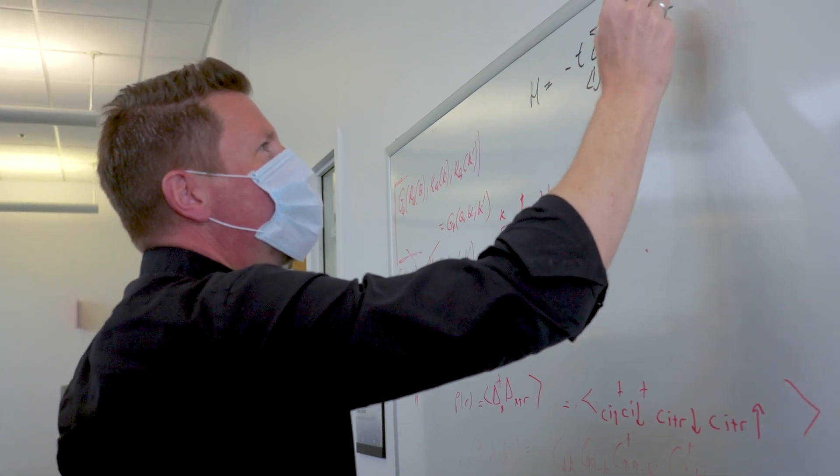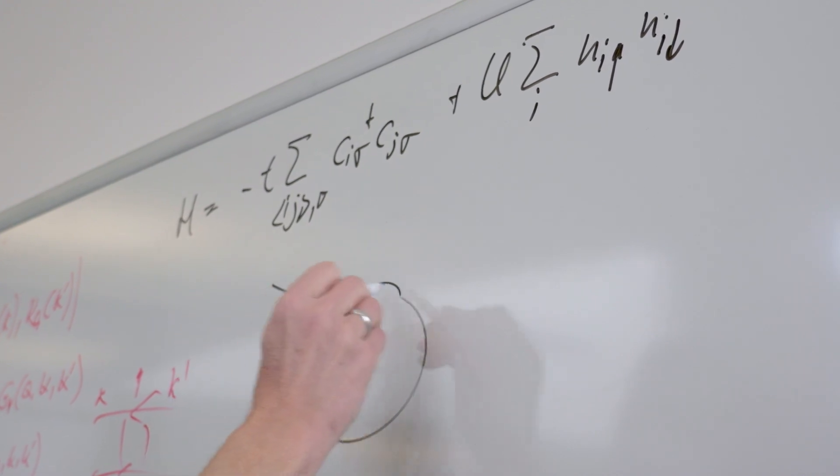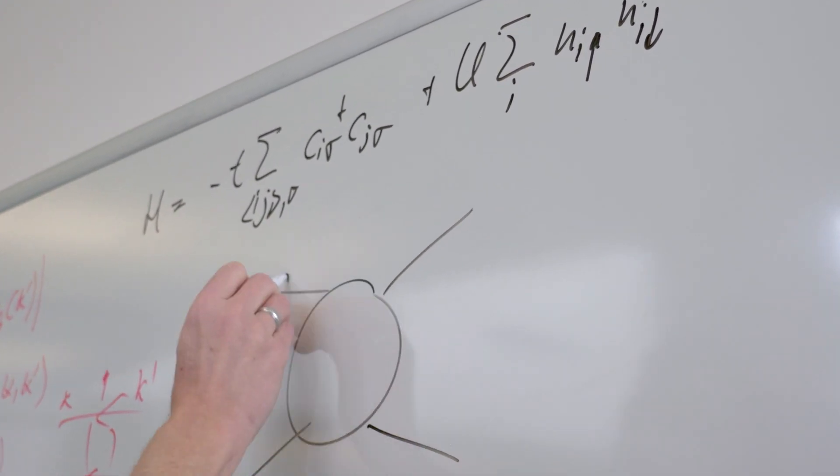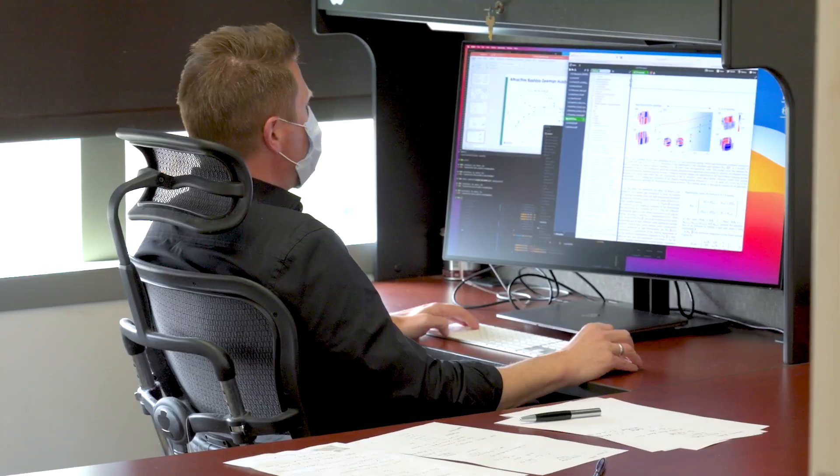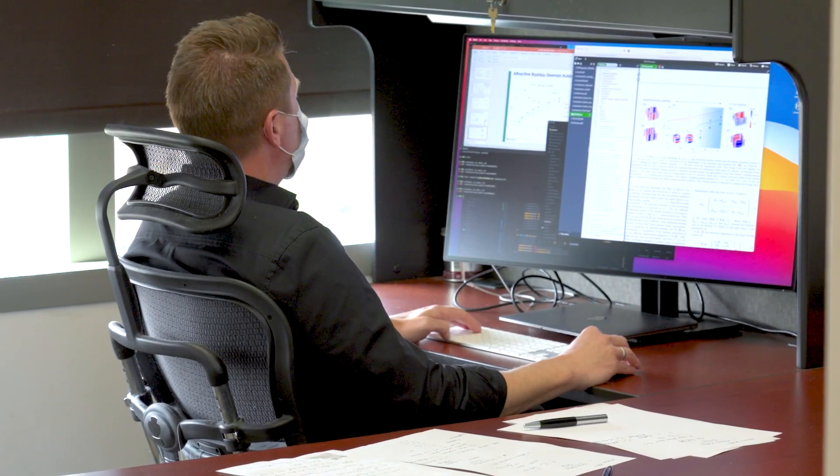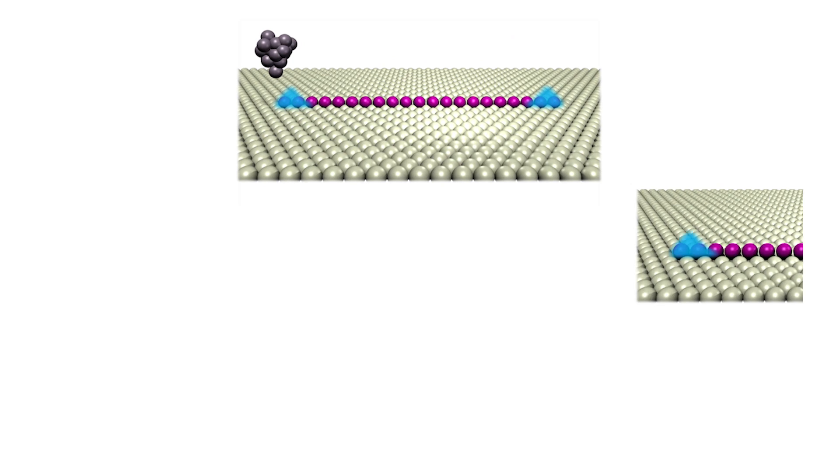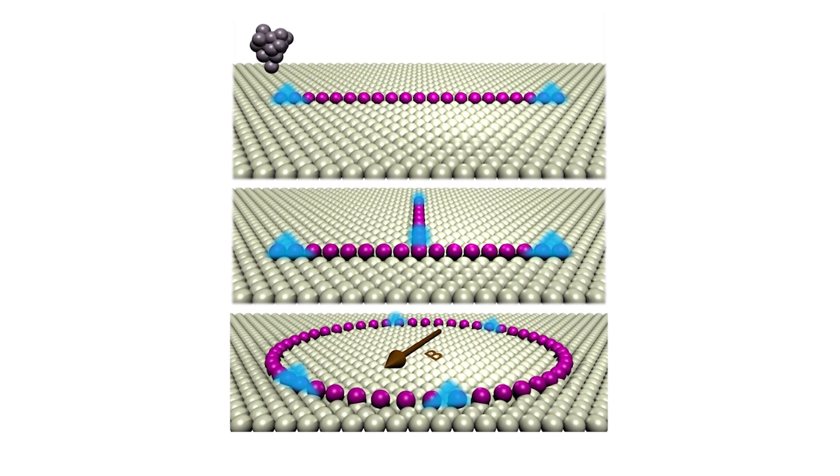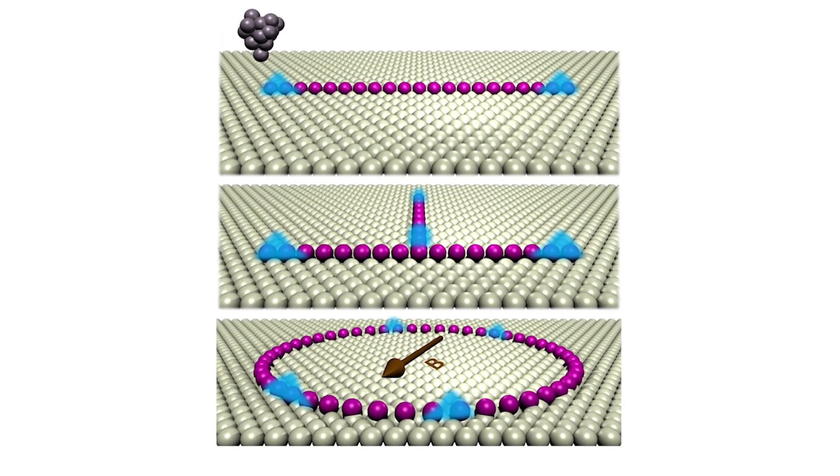In solid state systems, Majoranas can be created at the boundary of very exotic materials. Just like the particles themselves, the materials have to be very exotic. They are what we call topological superconductors, and because they are so exotic they are very hard to find in nature. But it turns out that one can actually engineer these systems using artificial hybrid structures. One way to realize that, for example, is to grow a one-dimensional atom chain on top of a superconducting substrate, so then you will have Majorana fermions located at the end of that chain.